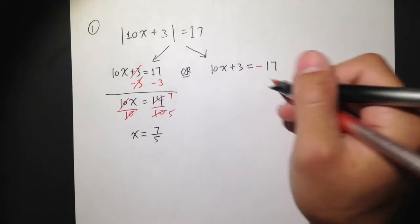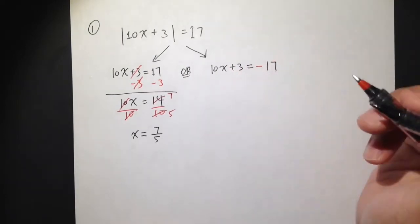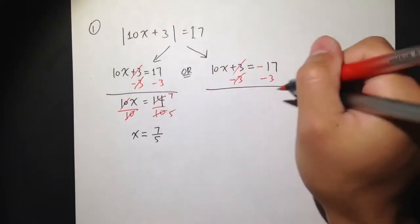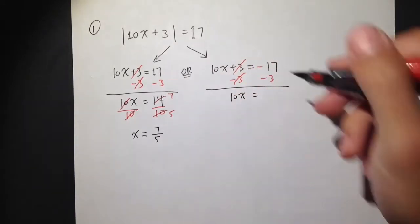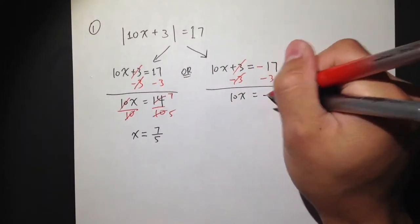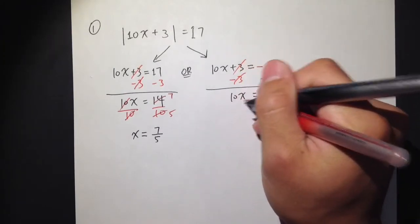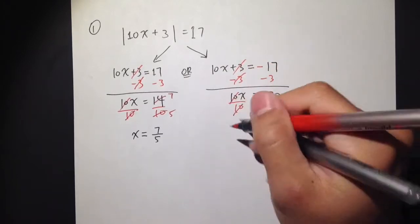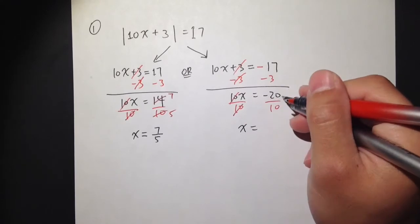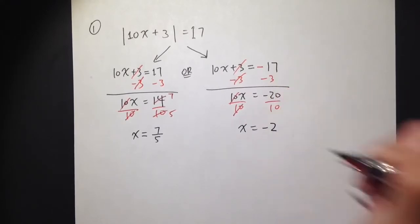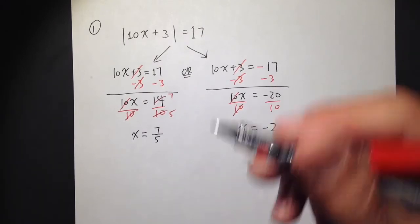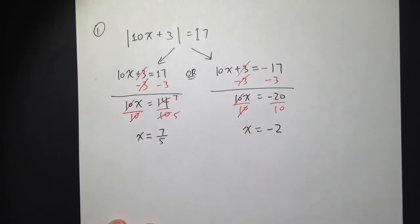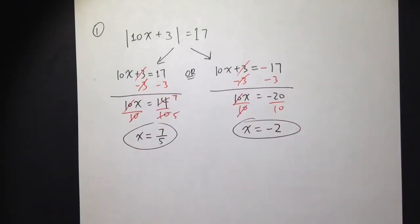For the second equation, we work with negative 17 instead. Subtract 3 from both sides — the 3 cancels — and 10x equals negative 17 minus 3, which is negative 20. Divide both sides by 10, and x equals negative 20 over 10, which is negative 2. So whenever you are solving an absolute value equation, it's very likely to end up with two different answers — we circle both of them.